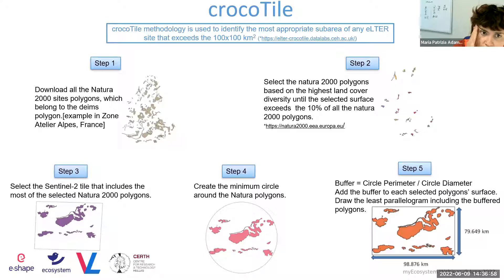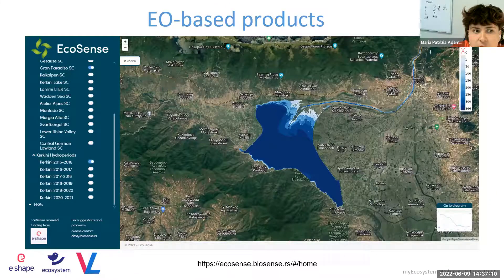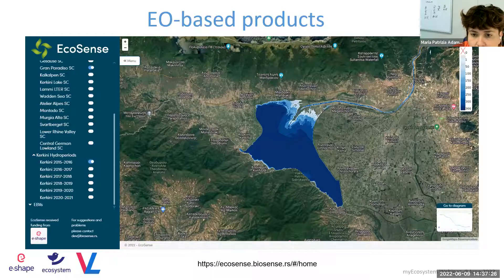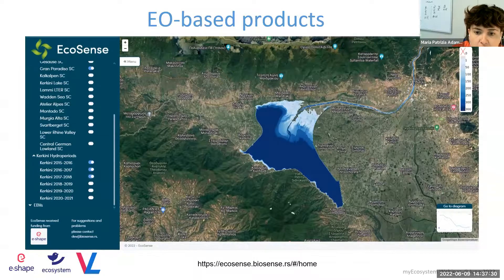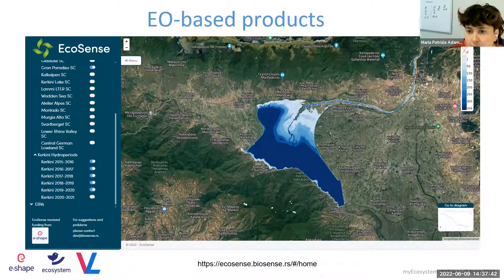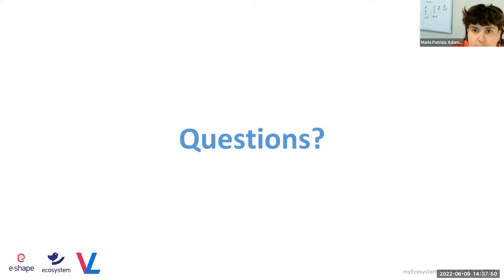The CROCODILE service, already mentioned by my colleague, was developed by MySpace partners. All products will also be available in the EcoSense portal — for example, the hydroperiod for the Porcini site is available for years 2015 to 2021 when Sentinel-2 data are available. You can download products obtained using workflows implemented in the VLab, or alternatively run the workflows in the VLab on your own data. Thank you for your attention — I'm happy to take questions.